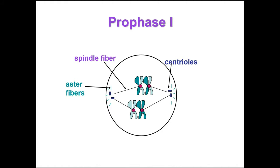Synapsis is when they pair up — the one from mom pairs up with the one from dad that has the same sets of genes. Crossing over is where they actually exchange pieces of DNA, and the chiasmata are the regions where the exchange of DNA has occurred. This crossing over and exchange of DNA gives variability in the gene pool.